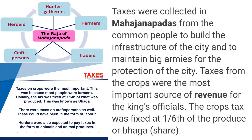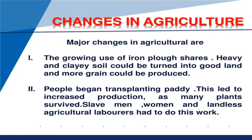Now we will talk about the changes in the agriculture system. During the Mahajanapadas, we have seen two types of changes which increased production in agriculture activities. Agricultural production was the most important activity, and 80% of tax was collected from the agriculture field, so kings also focused on this matter.